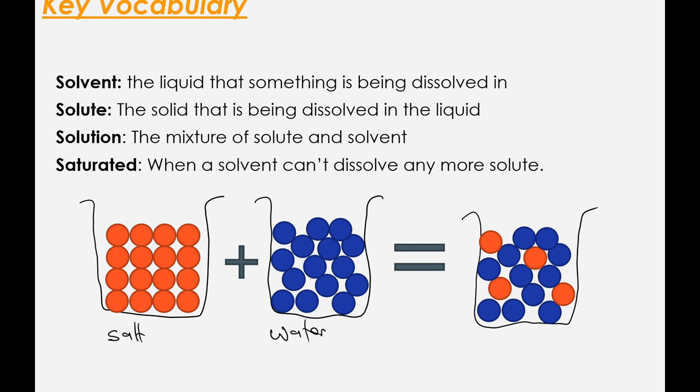So there's a couple of key bits of vocabulary that you need to know and understand. And they are on the board now. So you need to know the idea of a solvent. A solvent is the name of the liquid that something has been dissolved in. So in this experiment, what was the solvent? So the solvent was the water.